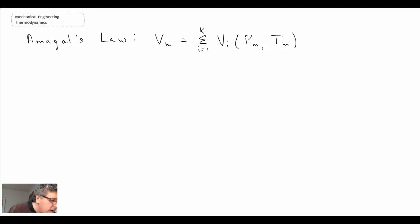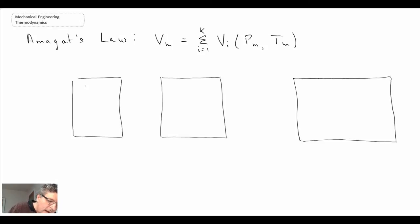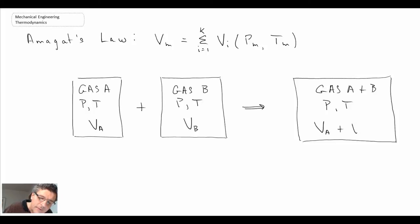Graphically we can illustrate that in the following manner. Imagine we have one container, then we're going to have another container that is slightly bigger, and then our third container is going to be of a volume equal to the sum of the first two volumes. So if we have gas A at pressure and temperature, gas B at the same pressure and temperature, and then gas A plus B again at the same pressure and temperature, we would have volume A and volume B. When we combine them together, the volume of the final container will be VA plus VB. That is a graphical illustration of Amagat's Law, which is also written in the summation at the top.